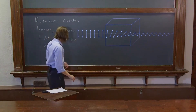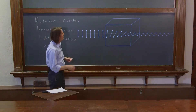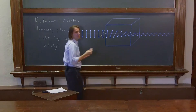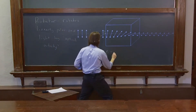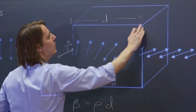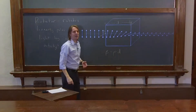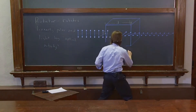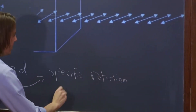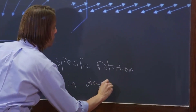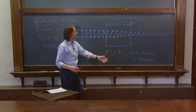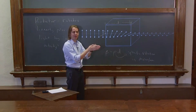So it went in vertical and it comes out at some angle. If it came in like this and exited like that, the angle is beta. We would say that beta equals rho times d, where d is the thickness of the material, and rho is called the specific rotation, in units of degrees per millimeter. So if you want to know how much you're going to rotate light, you look up its specific rotation and figure out how thick a piece of material you need.